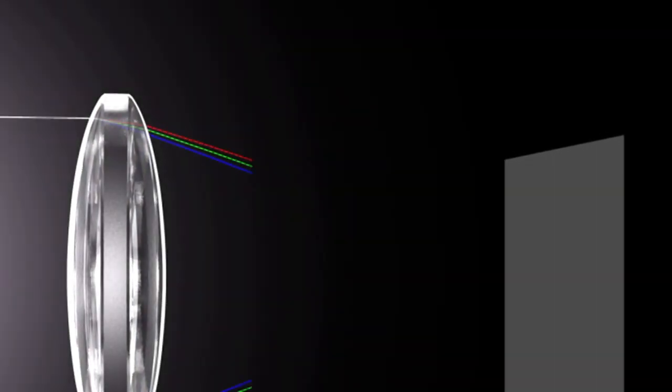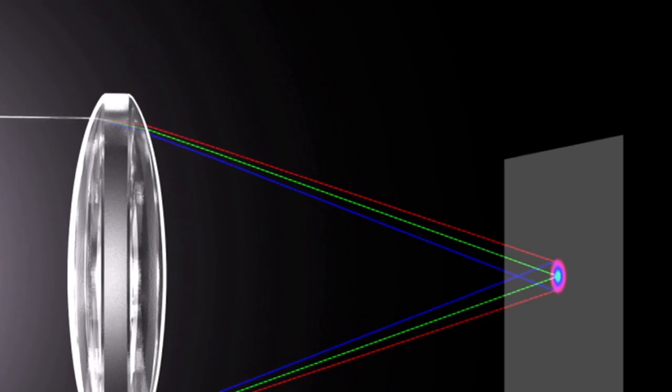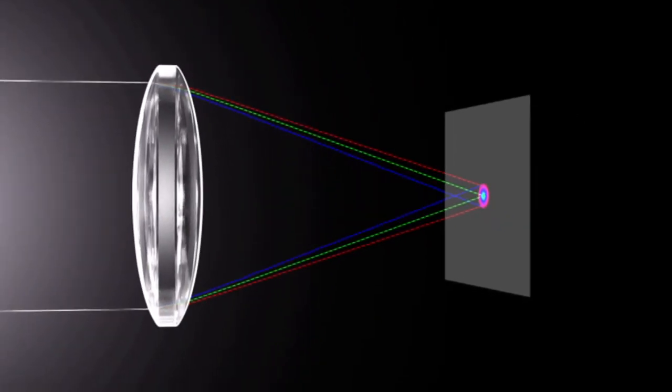The focal point for blue light, which has a short wavelength, is closer than that for red light, which has a long wavelength. This causes the colors to bleed.